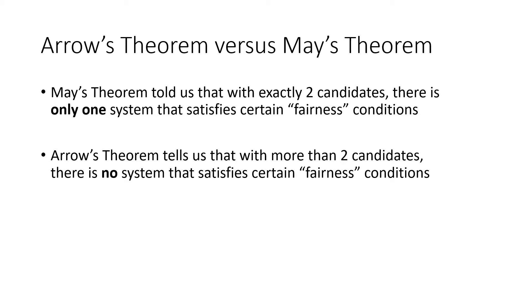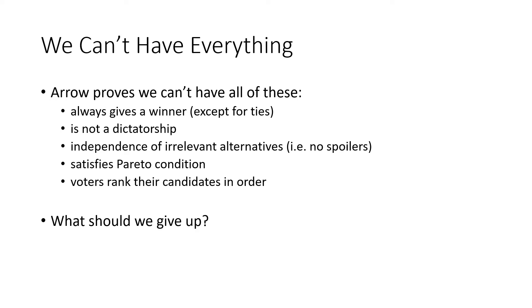So we can't have everything. We can't have all five of these conditions, so what should we give up? If we have to give up something, let's go through the list and think about what would be the one of these five conditions that we could live without.